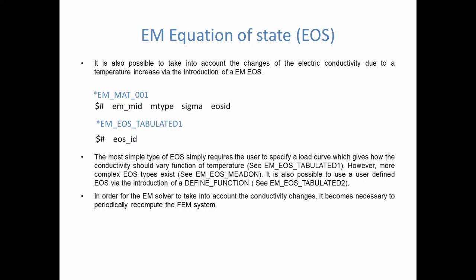And then finally, there's another way, another interaction type between the EM solvers and especially the thermal solver. And that is by taking into account the changes of the electric conductivity due to temperature changes mostly, but it could also be other mechanical properties. So this is done via the introduction of what we call an EM equation of state, an EMEOS. So the EMEOS is defined in the EMEOS keyword family and associated to an EM material ID. You know, it's what you see below, it's the fourth flag. The most simple type of EOS simply requires the user to specify a load curve, which gives how the conductivity should vary function of temperature. You can see here the keyword EM_EOS_TABULATED1.